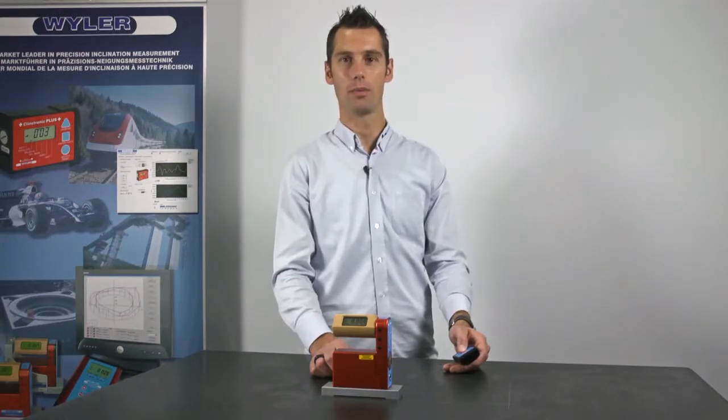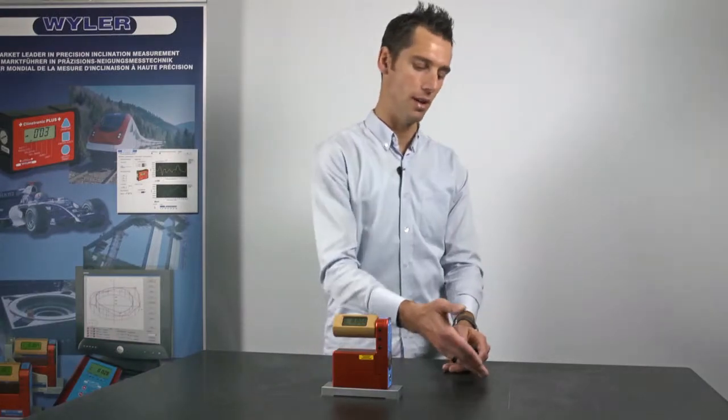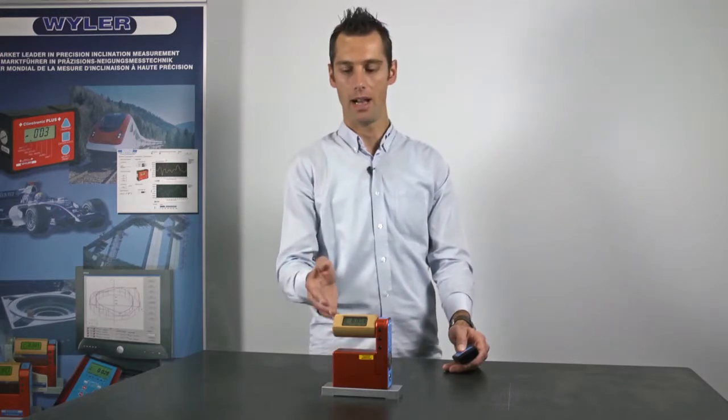Now I'm showing you how to align an object horizontally, in our case a granite setting plate, using a Blue Level.